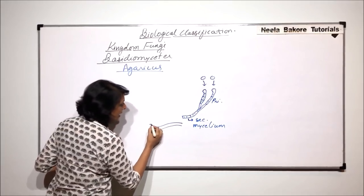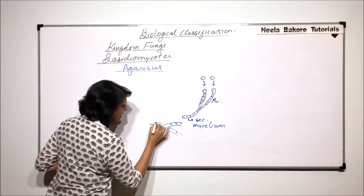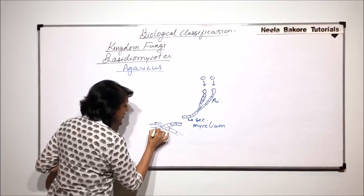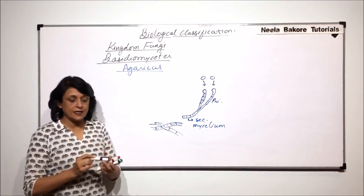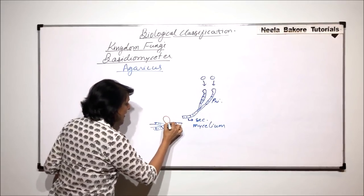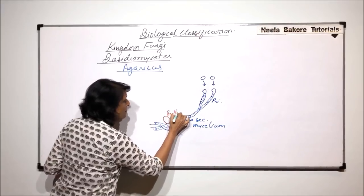On these secondary mycelia which are segmented and dicharyonic, during reproductive season we find a bulb-like outgrowth. There is an outgrowth which is seen which is in the form of a bulb.